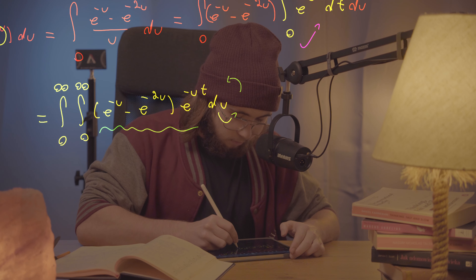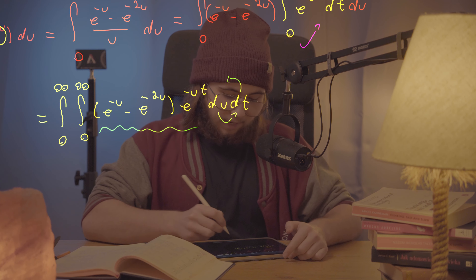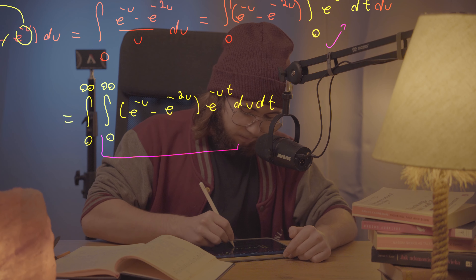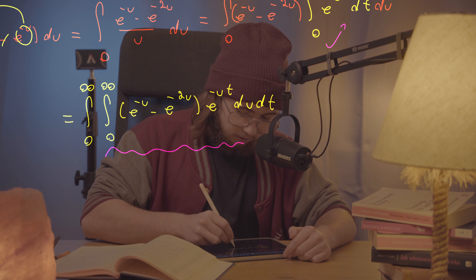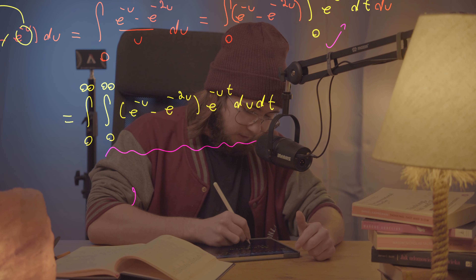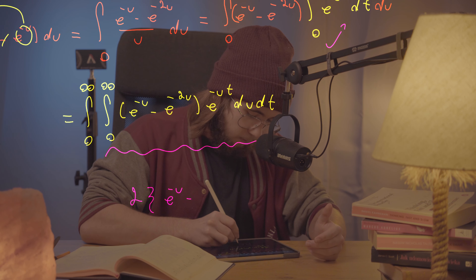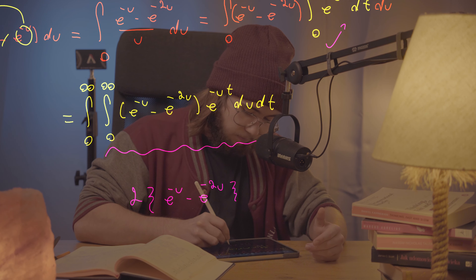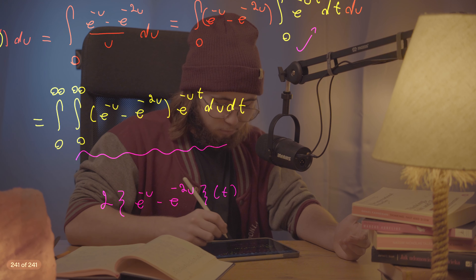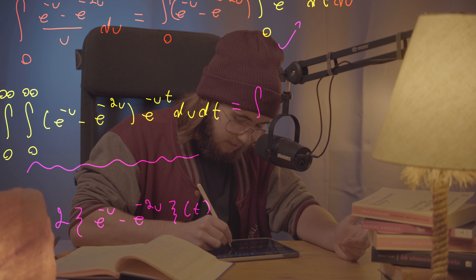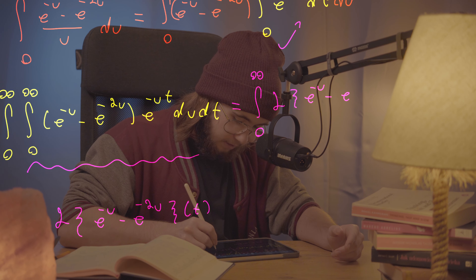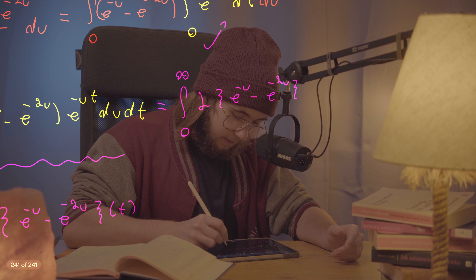I'm just going to change the order to du dt. The nice thing now is that this inner integral of those exponentials with respect to u is actually just the Laplace transform of the function e^(−u) − e^(−2u), with parameter t. That's huge, because I can rewrite this entire integral as the integral from 0 to infinity of the Laplace transform of (e^(−u) − e^(−2u)) evaluated at t, then dt.